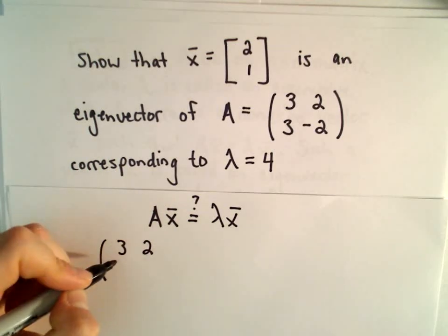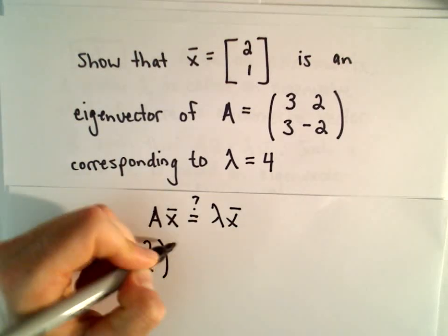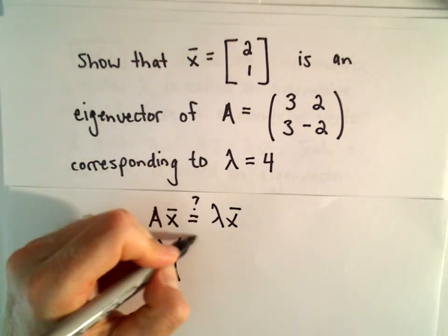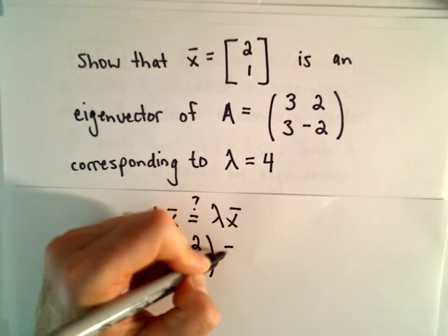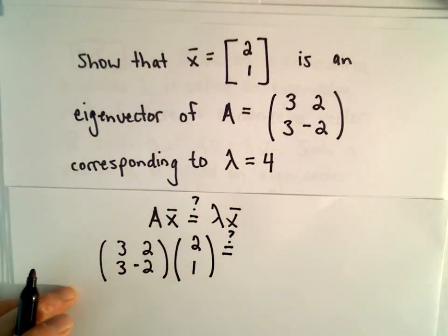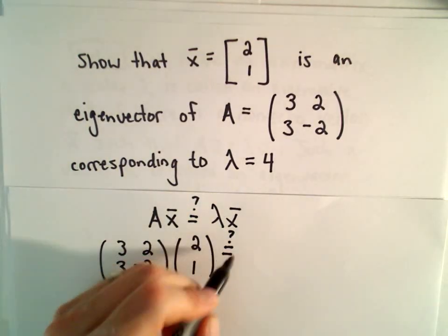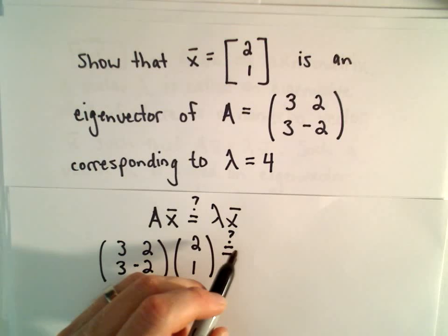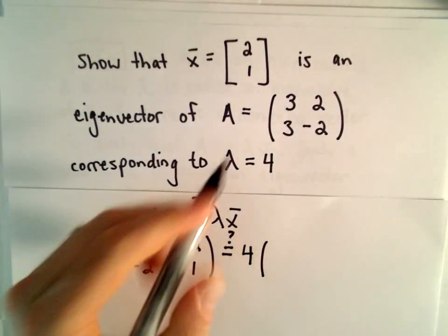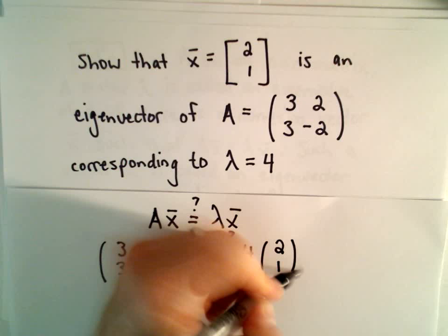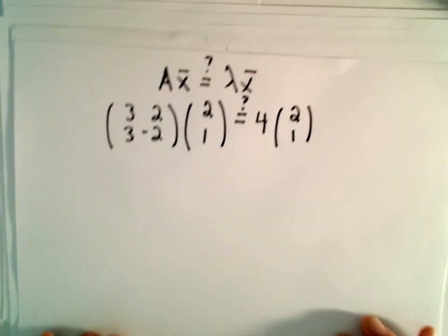So our matrix A has entries 3, 2, 3, and negative 2. Again, our vector x has entries 2 and 1. And I'm asking myself, well, is that going to be equal to the right side when we take λ, which is 4, and multiply that by x?